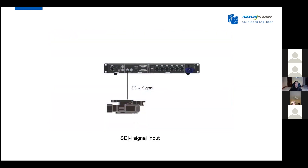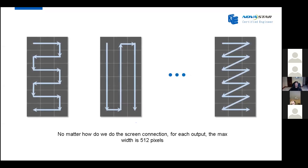The third precondition is about the source: we cannot use the SDI internal signal. When the sending card receives the internal signal, the first thing it needs to do is internal lancing — a process that takes some time to merge and process the video source. That makes real-time image output and low latency impossible.